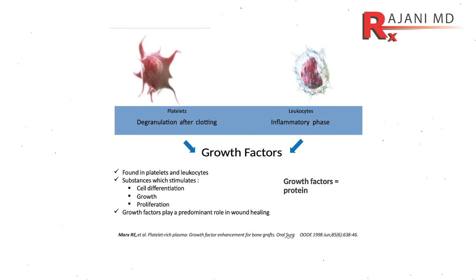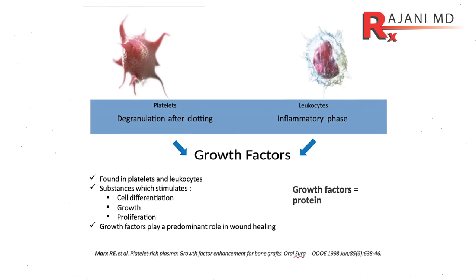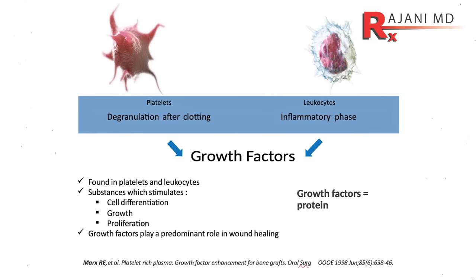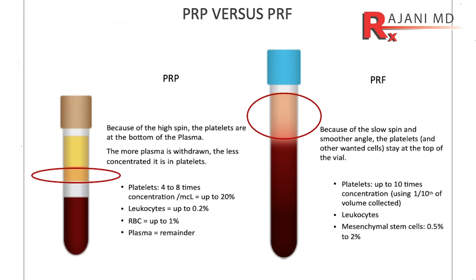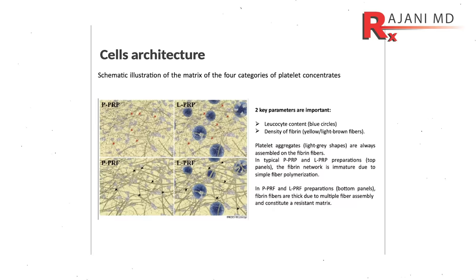White cells are known to have an important role in growth factors, and you can see from this slide a higher degree of white blood cells in PRF — platelet-rich fibrin — over PRP. That's the first and most important studied factor: we want those white blood cells.